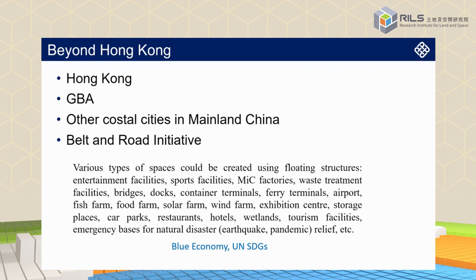Looking beyond Hong Kong to the Greater Bay Area and other coastal cities in mainland China, as well as countries along the Belt and Road Initiative, there are many different types of spaces that could be created using floating structures — terminals, different types of farms, tourism facilities, and emergency bases for natural disaster relief including earthquakes and pandemics. All of this will contribute to the blue economy and the United Nations sustainable development goals.